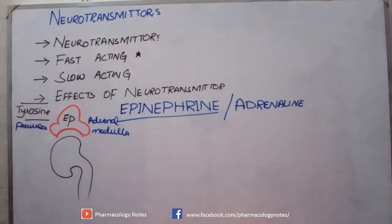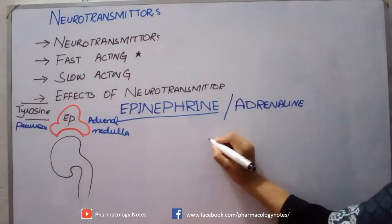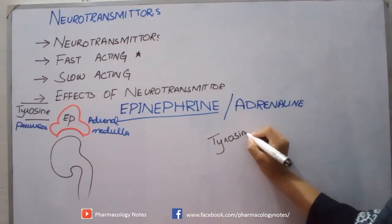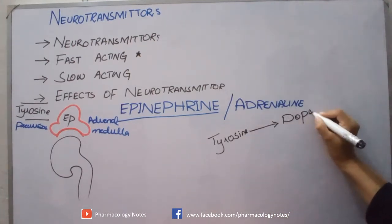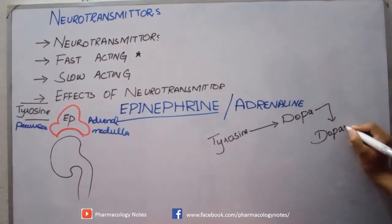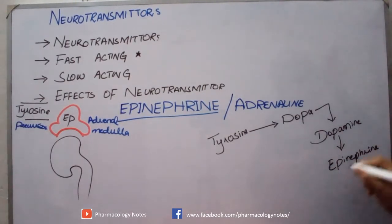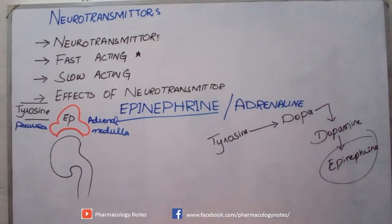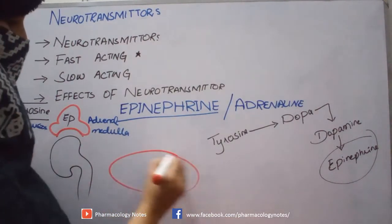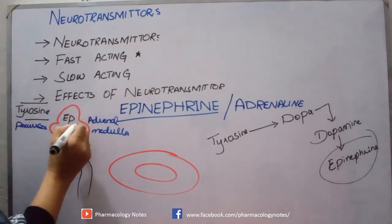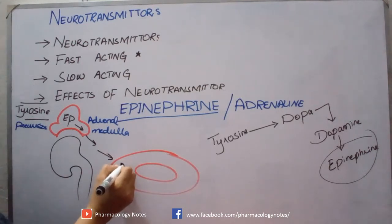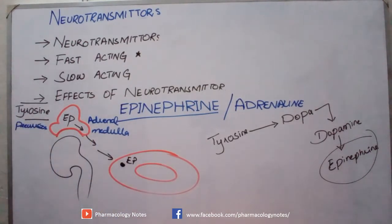As epinephrine is synthesized from tyrosine in the adrenal medulla, it is then released into the bloodstream. The pathway is: tyrosine undergoes conversion into DOPA, DOPA is converted into dopamine, and then dopamine is converted into epinephrine. This epinephrine is then sent into the systemic circulation and from there reaches its target sites.